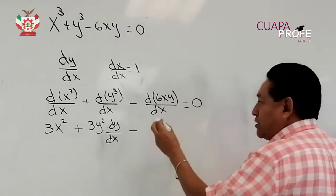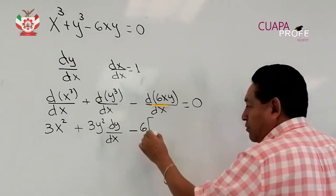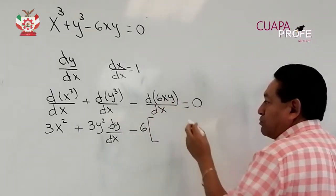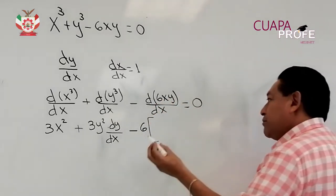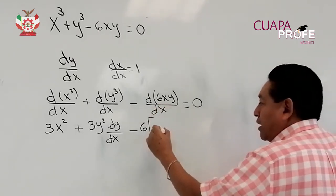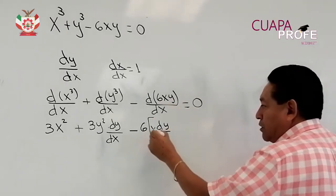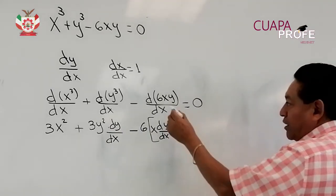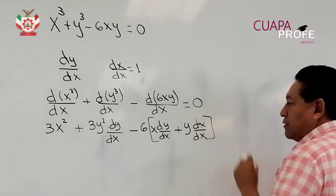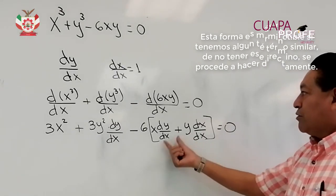Tengo x que multiplica y, entonces voy a sacar el 6, que es una constante, y lo escribo dentro de un paréntesis. Primero voy a derivar con respecto de x y luego con respecto de y, aplicando la regla del producto de dos funciones. Tendríamos la derivada de y con respecto de x y escribo x afuera, y luego más, será y por la derivada de x con respecto de x, igual a 0. Esto es a lo que me refiero cuando digo que es un producto.